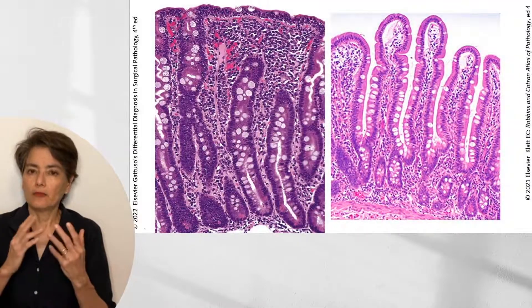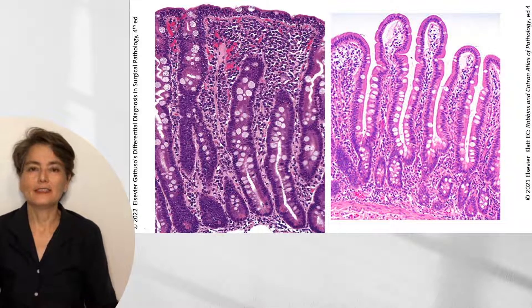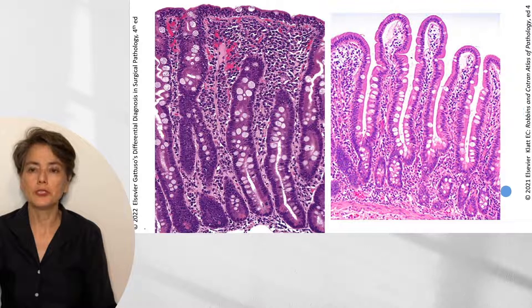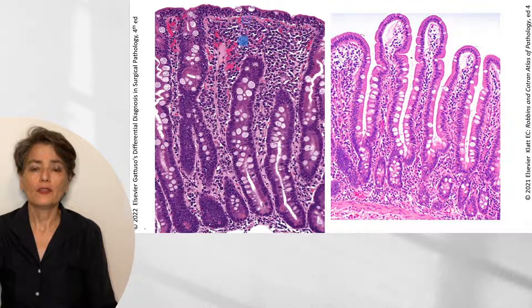Let's look at a flagrant example of celiac disease. This almost looks like colon — there are no villi. We have a compare and contrast here with a normal duodenal mucosa, where we see nice long villi and very few intraepithelial lymphocytes. By contrast, in celiac disease, we see very long crypts, no villi, and this is the classic appearance of severe celiac disease.